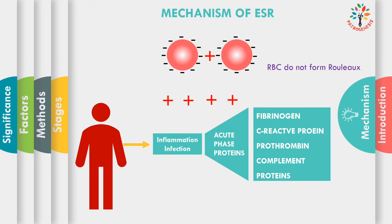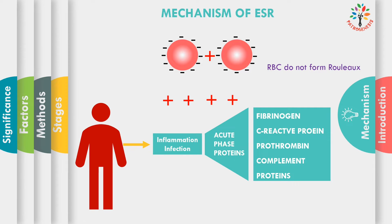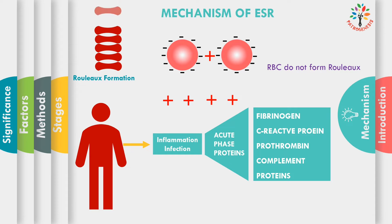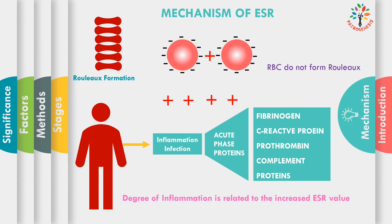Therefore, the presence of various inflammatory conditions will result in increased plasma proteins, and that will cause an increase in the formation of rouleaux. The formation of rouleaux allows the RBCs to settle at a faster rate, and therefore the ESR is increased. Thus, the degree of inflammation is related to the increased ESR value.